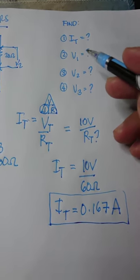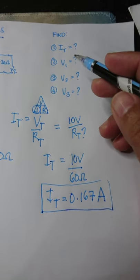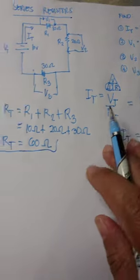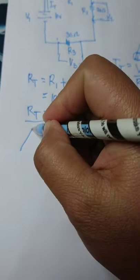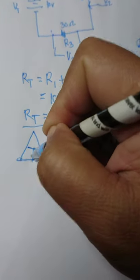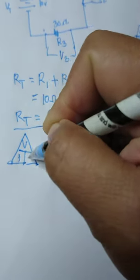Next, we will be solving for V1, V2, and V3. Again, using Ohm's law triangle, V, I, R. We're looking for the V.